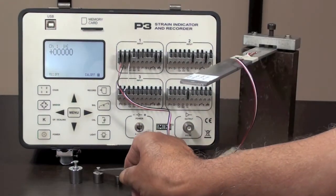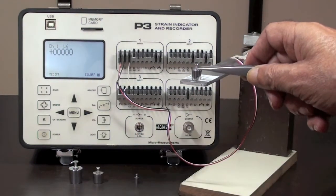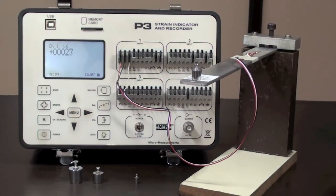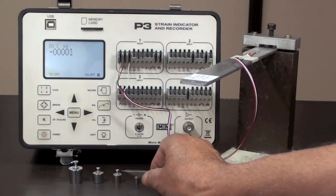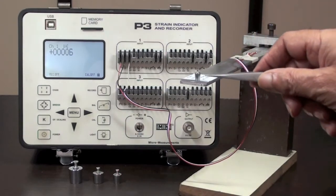With 5 grams, it should be 2.7 microstrain. And with 1 gram, the reading should be 0.5 microstrain.